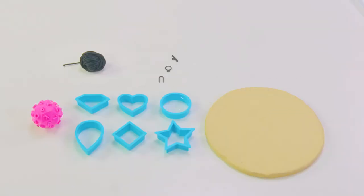For this project, you're going to need the clay disc, cookie cutters, and letter stamp. You will also need a pendant hook, toggle clasp, and stick toggle.